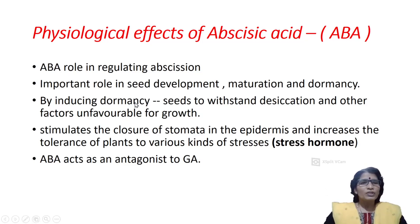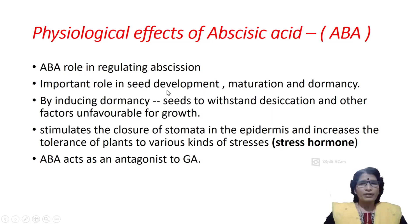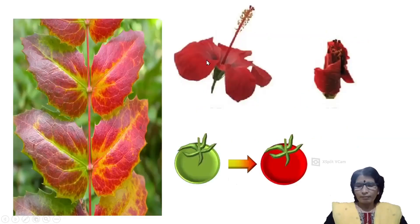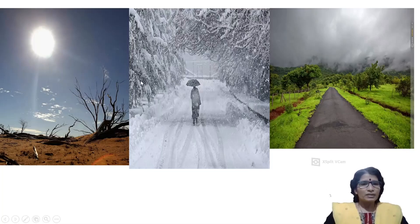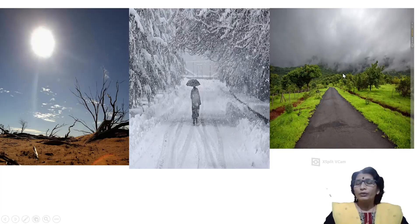Seeds need sufficient water and optimum temperature for seed germination. But during unfavorable conditions, seeds don't germinate — that is called dormancy. The unfavorable conditions include summer season, when water is not sufficient and temperature is very high, and winter season, when temperature is very low. In the presence of these unfavorable conditions, seeds undergo dormancy by the activity of abscisic acid. During rainy season, when sufficient water and optimum temperature are present, all dormant seeds usually germinate. That is why during rainy season, our surroundings become green.